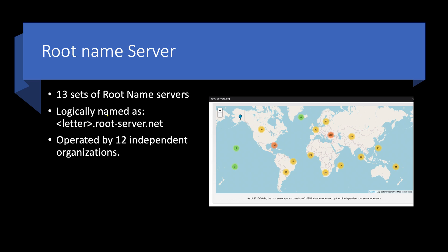Next is the Root Name Server. There are 13 sets of root name servers, logically named as letter.root-servers.net, where the letter can be from A to M. These are operated by 12 independent organizations. You can go to root-servers.org to see all the details — you can click on a particular group and explore further.